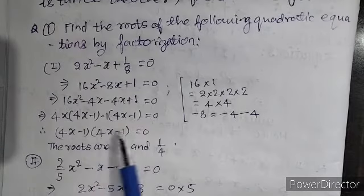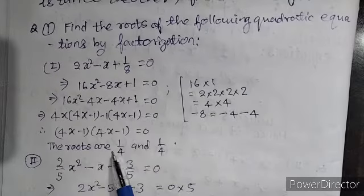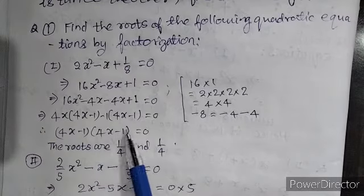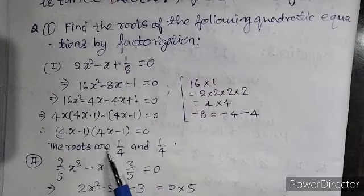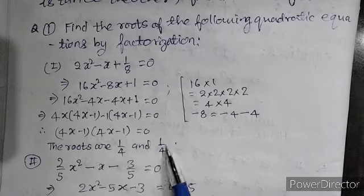4x minus 1 into 4x minus 1 equal to 0. This implies that roots of the equation are 4x minus 1 equal to 0 and 4x minus 1 equal to 0. So, values of x are 1 by 4 and 1 by 4.